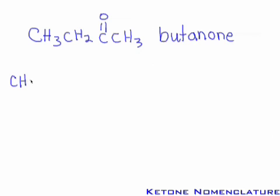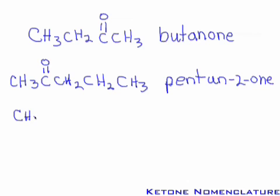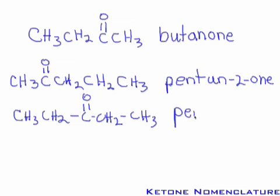Likewise, 2-butanone can also have its number removed and be referred to simply as butanone, because no matter where the C double bond O appears, it is always at position 2 in a butane chain. But once you get to five carbons, numbering becomes required, because you can have both 2-pentanone and 3-pentanone — chemically very different molecules. So for longer chains, always designate the position of the ketone by number.